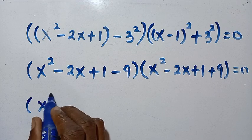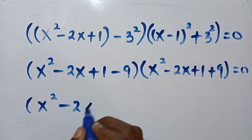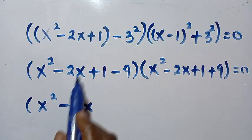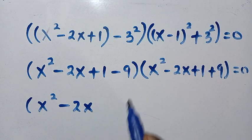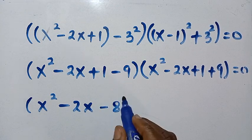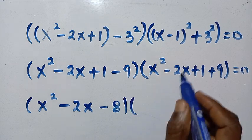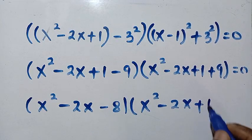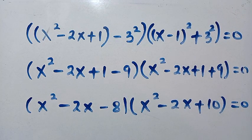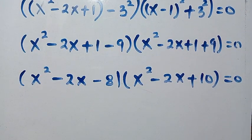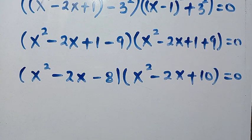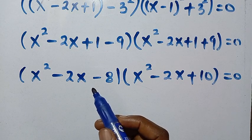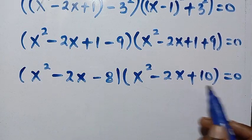Simplifying: the first bracket gives x squared minus 2x, and 1 minus 9 is minus 8. The second bracket gives x squared minus 2x plus 1 plus 9, which is plus 10. So we now have two quadratic equations: x squared minus 2x minus 8 equals 0, and x squared minus 2x plus 10 equals 0.